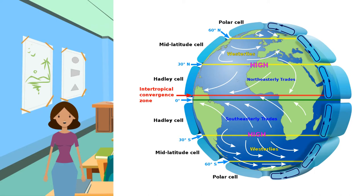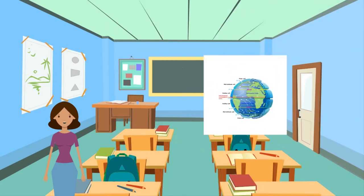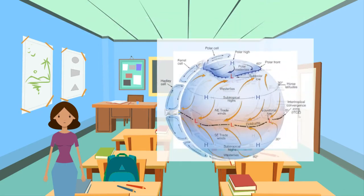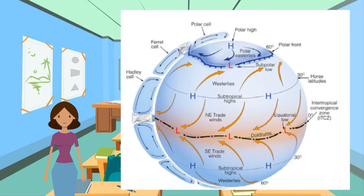These patterns can be illustrated by a model of global atmospheric circulation. The global atmospheric circulation model can be seen in this diagram. There are three distinct patterns of air circulation on either side of the equator. These circular air movements are called cells, which are the blue sections with black arrows in the diagram. The three cells are as follows.